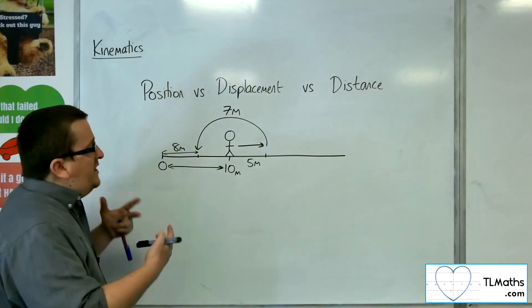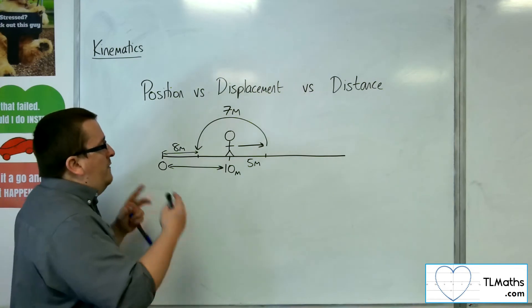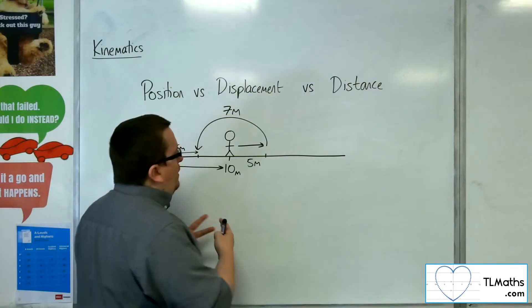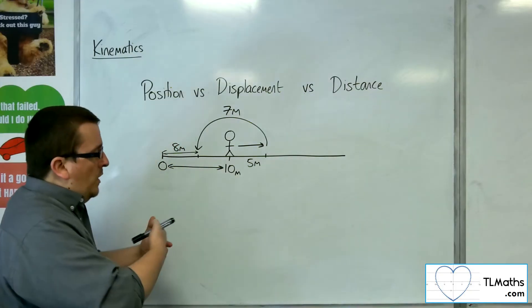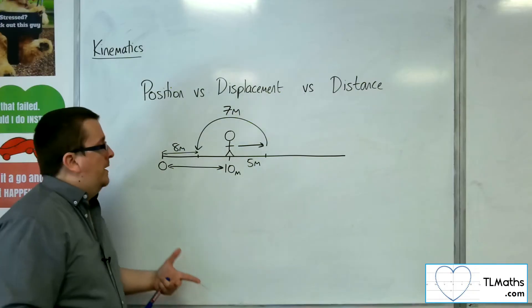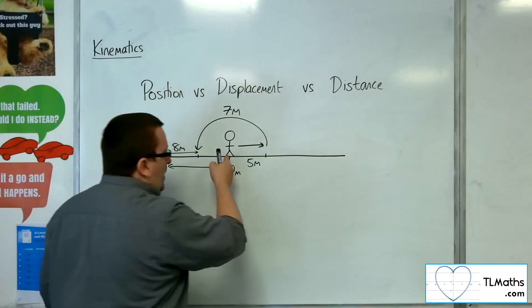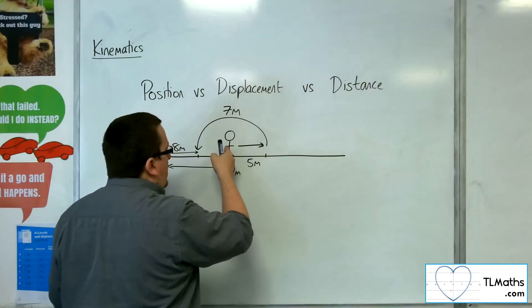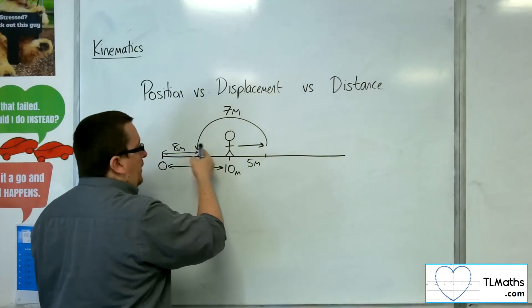So, their displacement is a vector quantity that tells you where they are in relation to, potentially, where they started. So, if the person started there, then they are now 2 metres back.